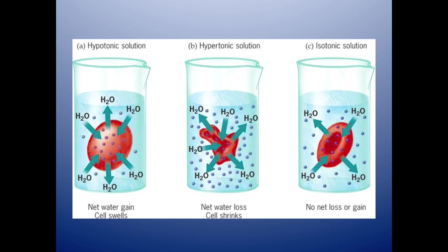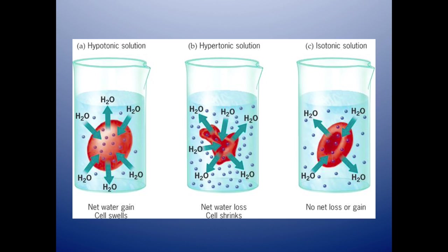This is a very important picture to understand — it's a common lab done in AP Bio and it's also commonly tested on the multiple choice section. There are three types of solutions: hypotonic, hypertonic, and isotonic. Hypotonic means the solution has less solute than the cell; hypertonic means the solution has more solute than the cell; and isotonic means the concentration of solute in the solution and in the cell is equal. In all three cases, water moves toward wherever there is more solute.